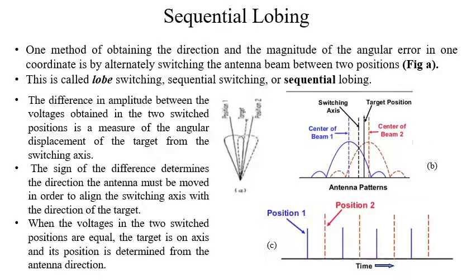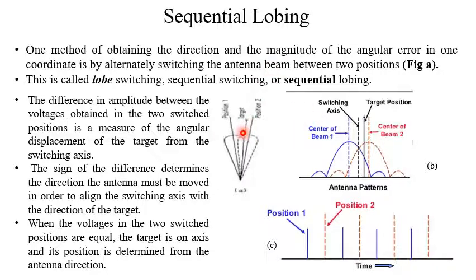One method of obtaining the direction and magnitude of the angular error in one coordinate is by alternately switching the antenna beam between two positions. The same antenna beam first moves in one direction, then produces the beam in position two. The same beam is alternately switched between position one and position two. This is what is done in sequential lobing, also called lobe switching, sequential switching, or sequential lobing.